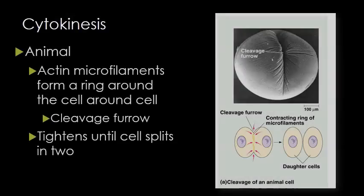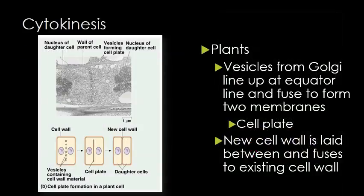The division of cytoplasm into two individual cells is cytokinesis, and the process differs between plants and animals. In animal cells, microfilaments form a ring of actin around the cell and tighten until the cell pinches into two. But plants are different — instead of using actin, the Golgi body produces many tiny vesicles that line up, fuse together, and form a cell plate. That cell plate will eventually fuse with the cell wall to produce a new section of cell wall. That is how cytokinesis works in plants.